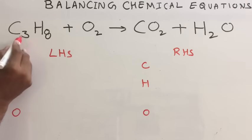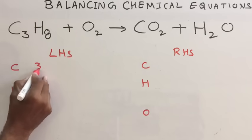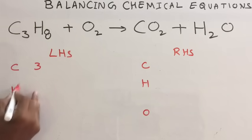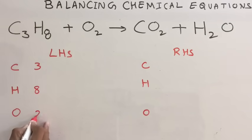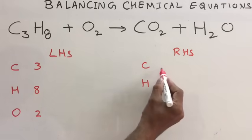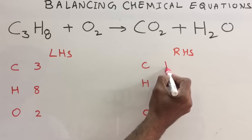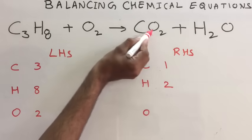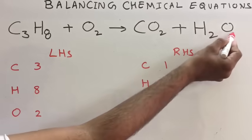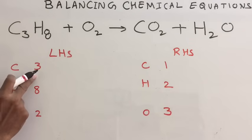For carbon, C3 means three carbon atoms, so write three. You have eight hydrogen atoms and two oxygen atoms on the LHS. Now check the RHS: one carbon atom, two hydrogen atoms, and oxygen — two here and one here — that means three oxygen atoms total.